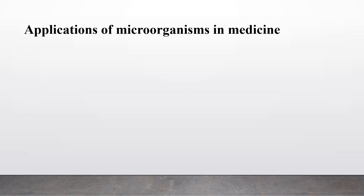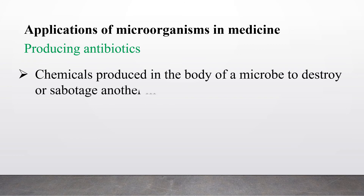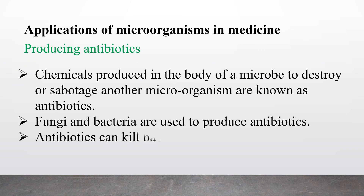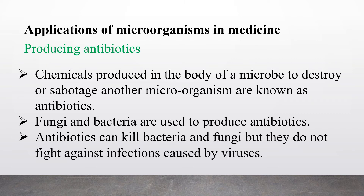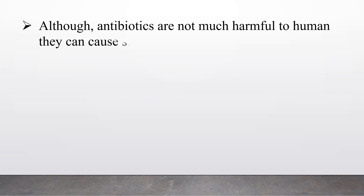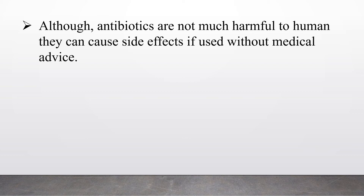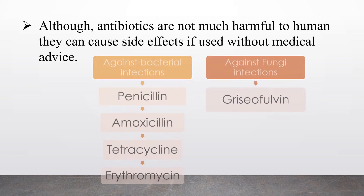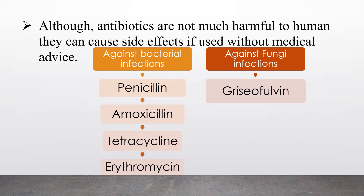Let's learn about the applications of microorganisms in the medical field. The first application is producing antibiotics. Chemicals produced by a microbe to destroy or inhibit another microorganism are known as antibiotics. Fungi and bacteria are used to produce antibiotics. Antibiotics can kill bacteria and fungi, but they do not fight infections caused by viruses. Although antibiotics are not very harmful to humans, they can cause side effects if used without medical advice. Examples include penicillin, amoxicillin, tetracycline and erythromycin against bacterial infections, and griseofulvin against fungal infections.